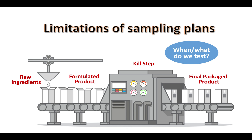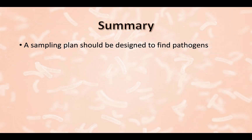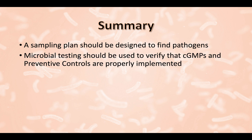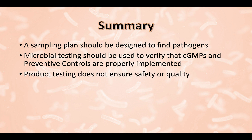A better approach would be to ask your supplier for their validated process as assurance that microbes are controlled in raw ingredients. In summary, there are numerous limitations to product testing, and even the best-designed sampling plan may not detect a pathogen when it is present. A sampling plan should be designed to find a pathogen. Microbial testing should be used to verify that good manufacturing practices and preventive controls are properly implemented. Product testing does not ensure safety or quality.